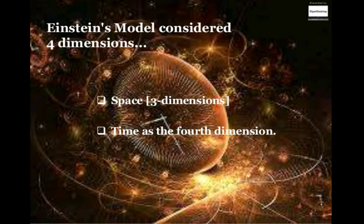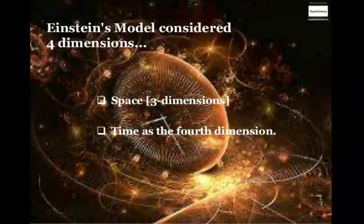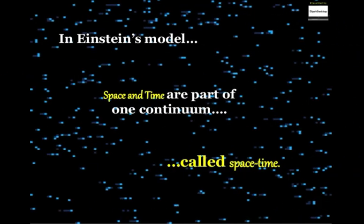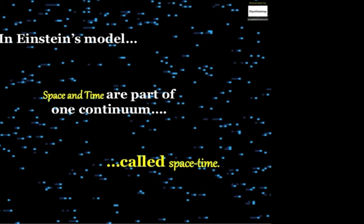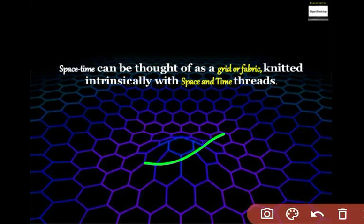Einstein's model considers four dimensions. Space has three dimensions and time as the fourth dimension. Combinedly it is known as the space-time model or four dimensional model. Space-time is part of a continuum. Space-time can be thought of as a grid or fabric.